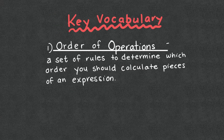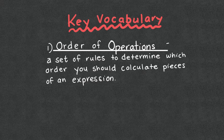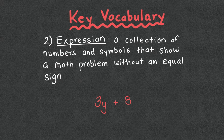Key vocabulary: number one, order of operations — it's a set of rules to determine which order you should calculate pieces of an expression. Number two, an expression is a collection of numbers and symbols that show a math problem without an equal sign. For example, 3y + 8 would be considered an expression because it doesn't have an equal sign.